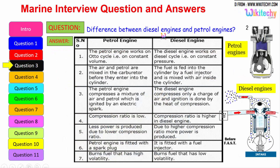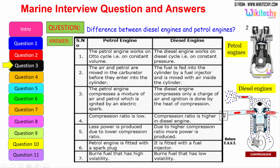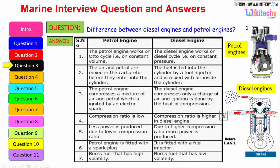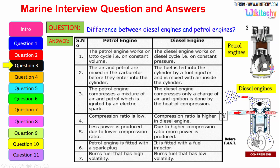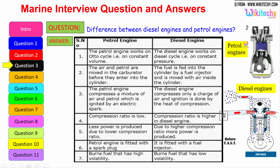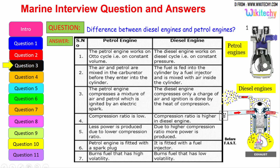Let us see the difference between the diesel engine and the petrol engine. The petrol engine works on the Otto cycle, therefore on constant volume. Whereas the diesel engine works on the diesel cycle, on constant pressure. The air and petrol are mixed in the carburetor before they enter the cylinder, whereas in the diesel engine, fuel is fed into the cylinder by a fuel injector and is mixed with the air inside the cylinder.